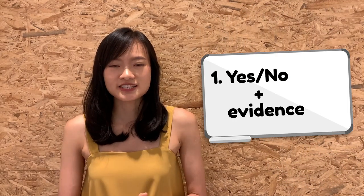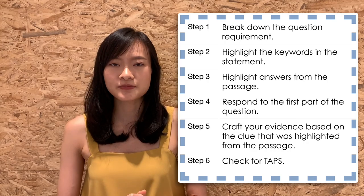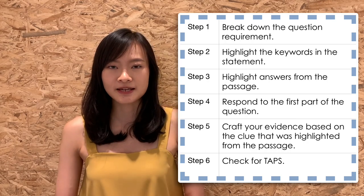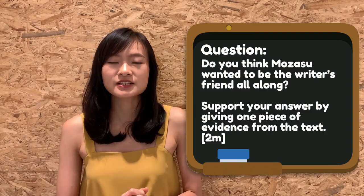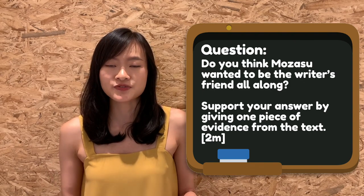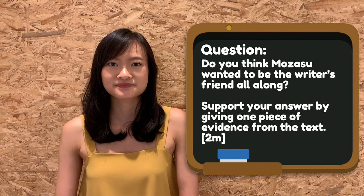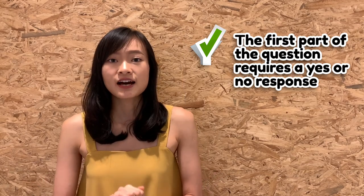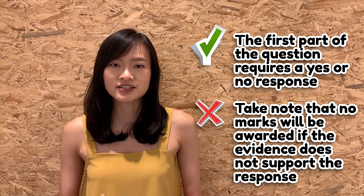The first type of question is a yes or no plus support with evidence type of question. In my previous blog post, I shared how this question type can be tackled using six steps. If you'd like to learn more about this step-by-step guide, click on the link below. Now consider the question: do you think Mozasu wanted to be the writer's friend all along? Support your answer with one piece of evidence from the text. The first part of the question requires a yes or no response. However, students ought to take note that no marks will be awarded if the evidence does not support the response.